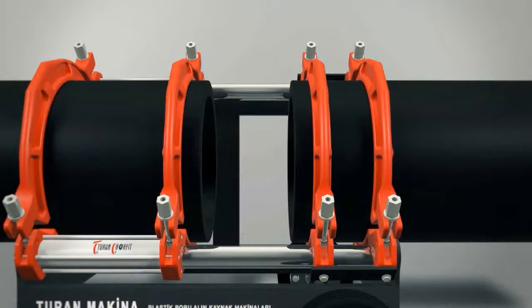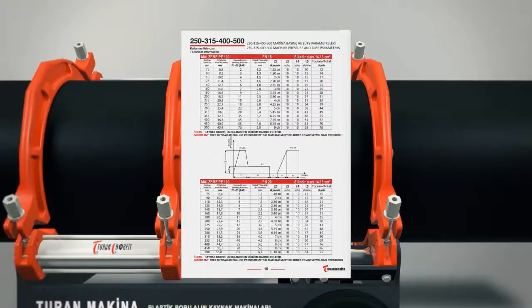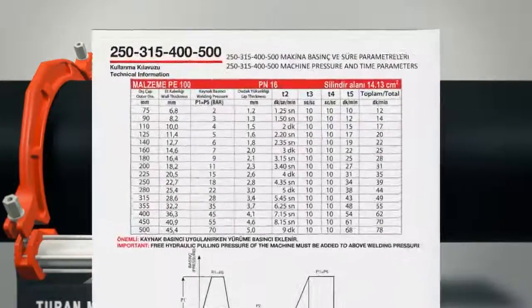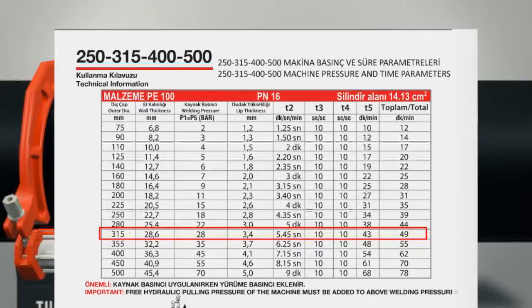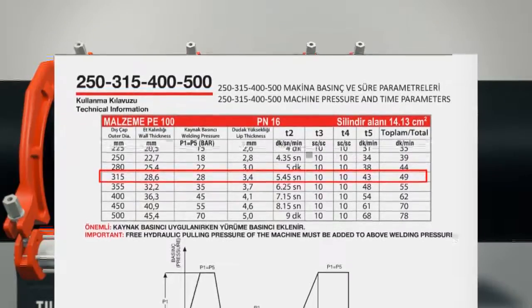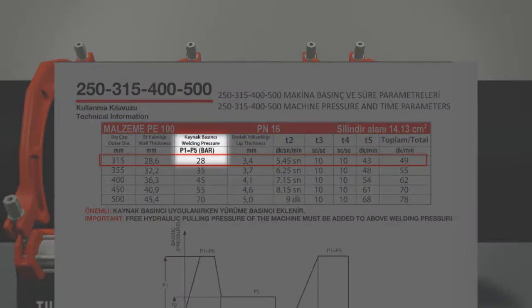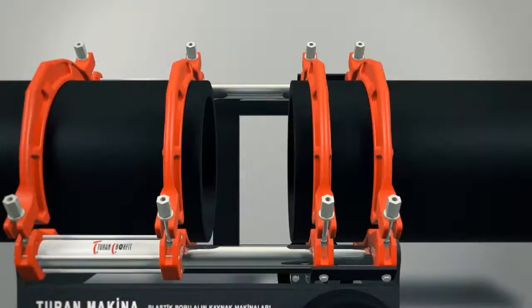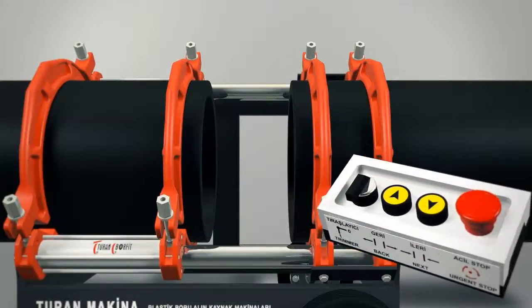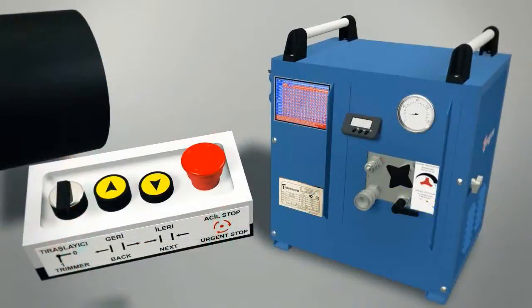Find diameter and PN value of pipe you will weld in the chart. Press continuously ahead walking button of machine. Before pipes come butt to butt, you will see walking pressure.